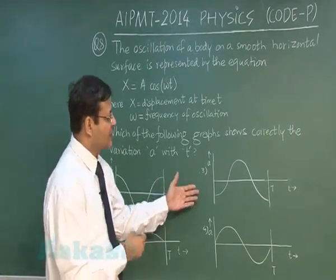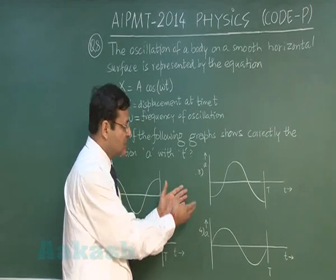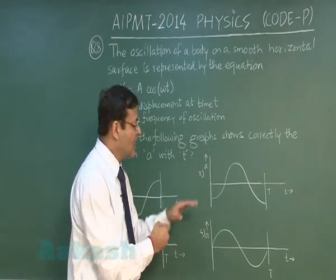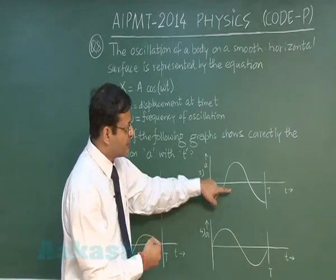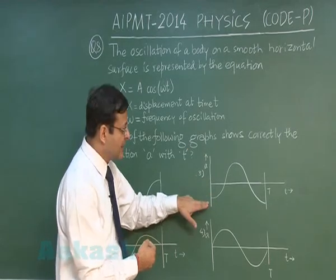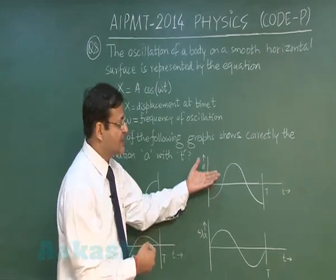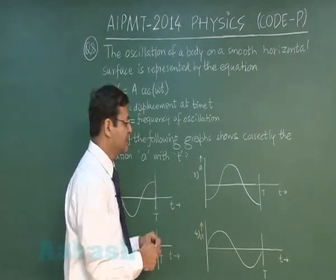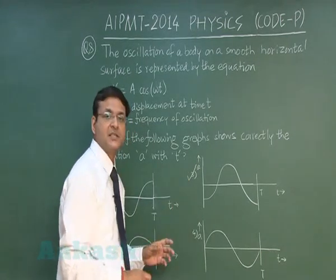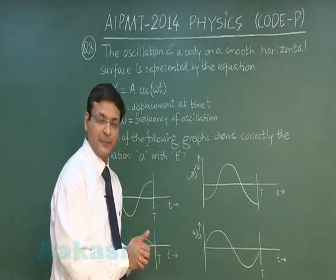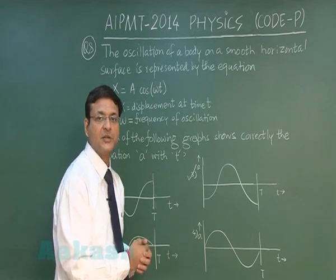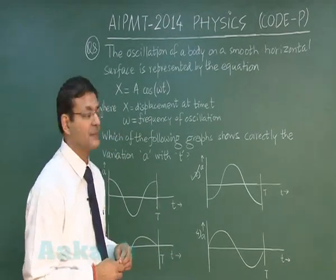The only answer which is true for minus cos is this graph. Had it been cos, it starts from the top like this, but if it is minus cos, it is starting from the lower end, just the inverse of the cos graph. The correct answer is option 3 for this acceleration-time graph. That is the explanation to this question. Now let us discuss the next question.